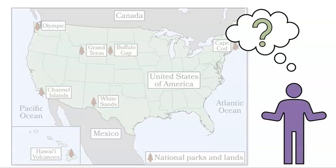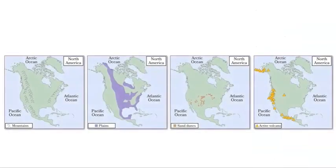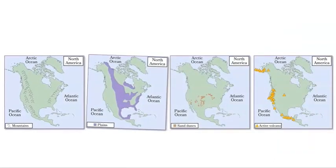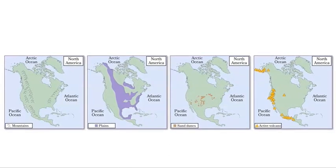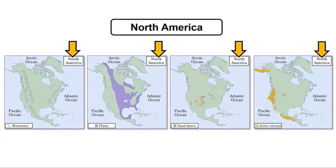Maybe we can look at landforms in other locations to help us answer the question: how can we describe the shape of land? Here are some additional maps that might help. These four maps show the same continent. Did you know that a continent is a very large area of land? Look at how large North America is. The United States is located in North America, and so are the national parks and lands we saw on the previous map.